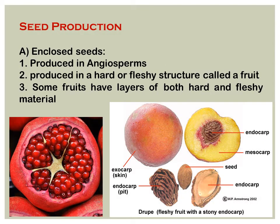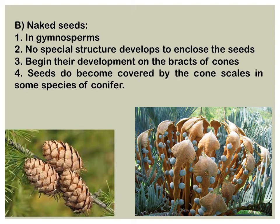There are two types of seeds. The first is the enclosed seed, which is produced in angiosperms. In angiosperms, seeds are produced inside a hard or fleshy structure called a fruit. Some fruits have layers of both hard and fleshy material. So in angiosperms, your seeds are enclosed.